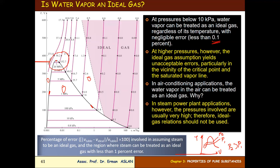One question: in air conditioning applications, the water vapor in the air can be treated as an ideal gas — why? For example, in a house, hotel, or any space with air conditioning, the water vapor in the air can be treated as an ideal gas.